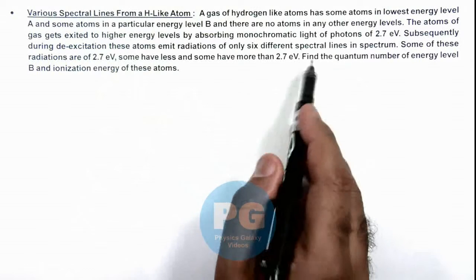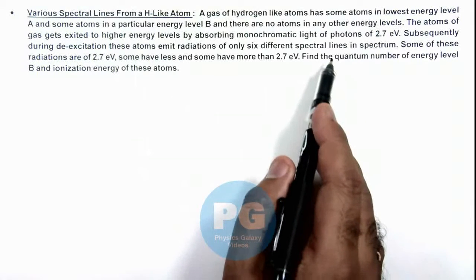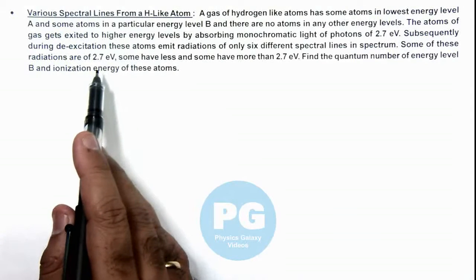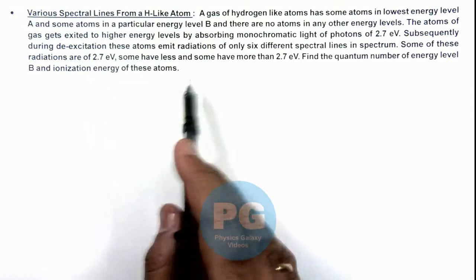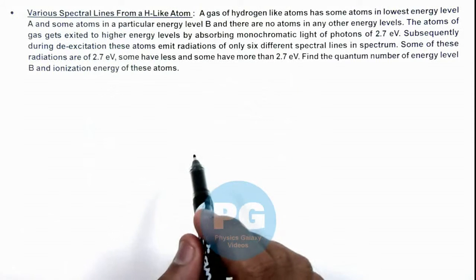These are different spectral lines, so 6 types of energies are emitted from the gas. It is also given that some of these are of 2.7, some have less, and some have more than 2.7 electron volts.